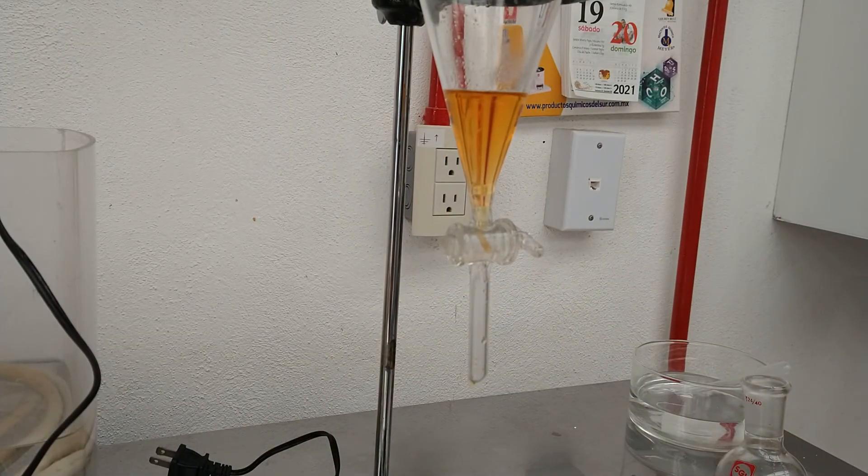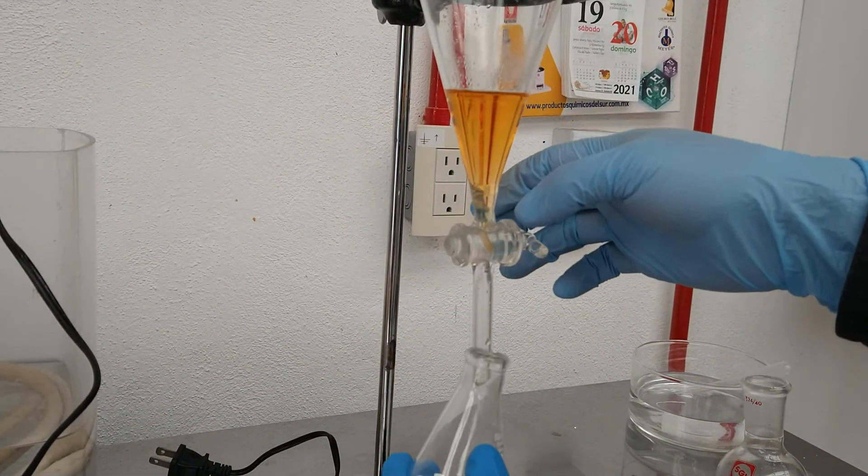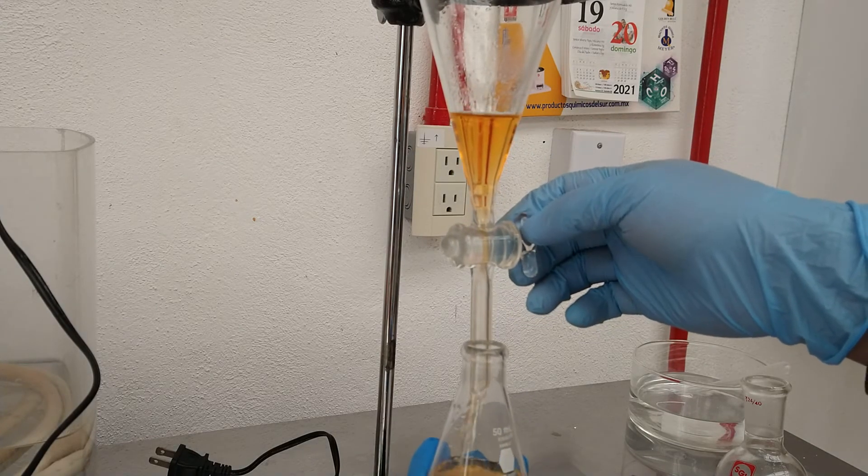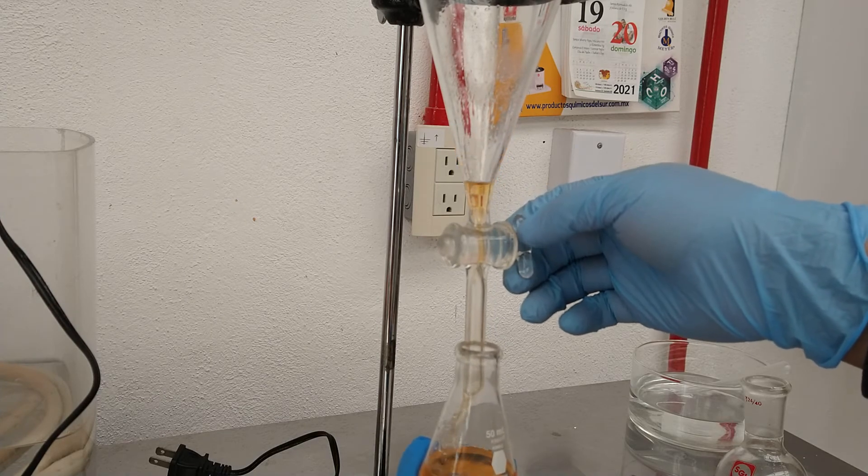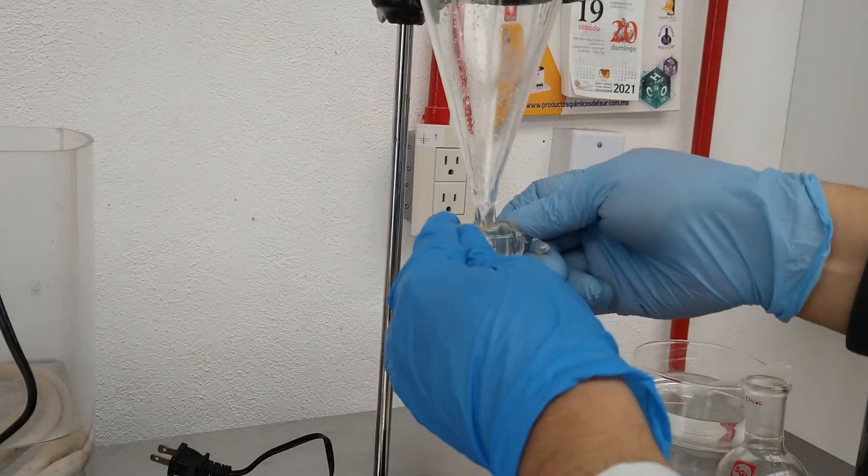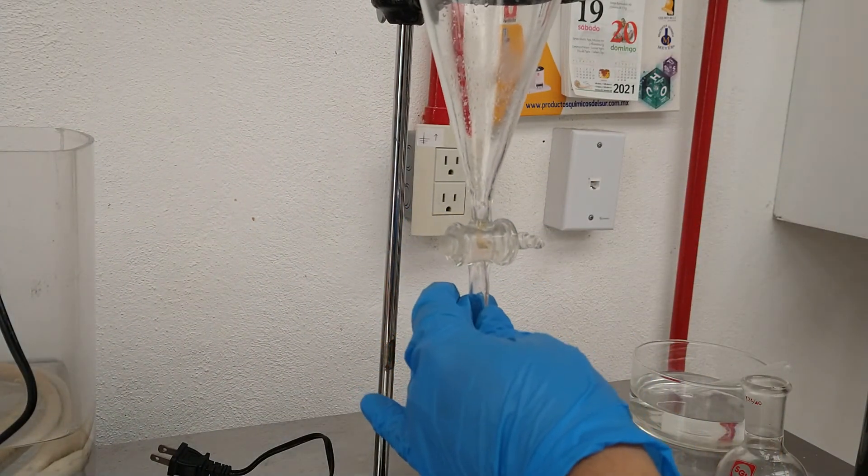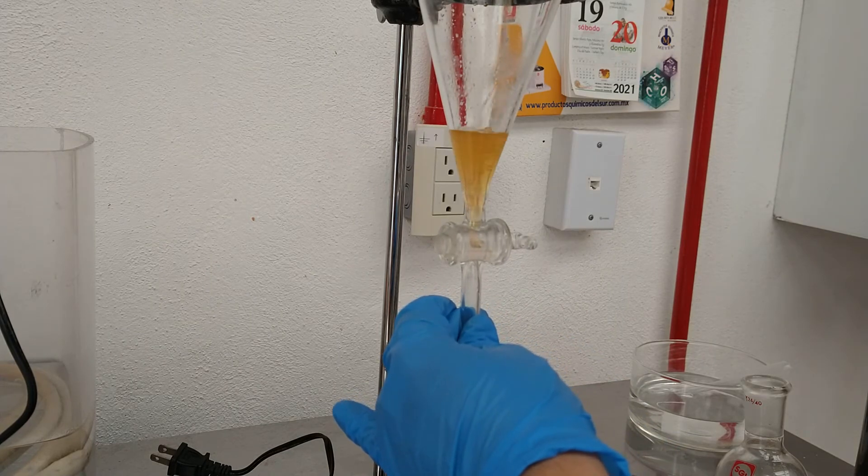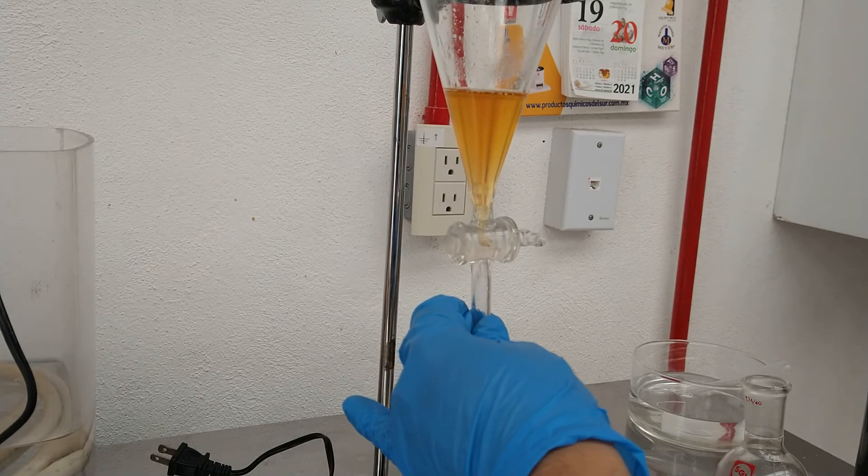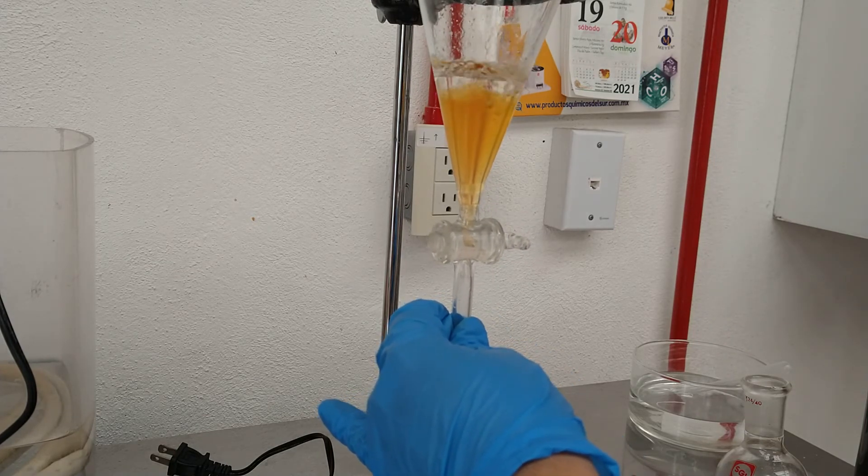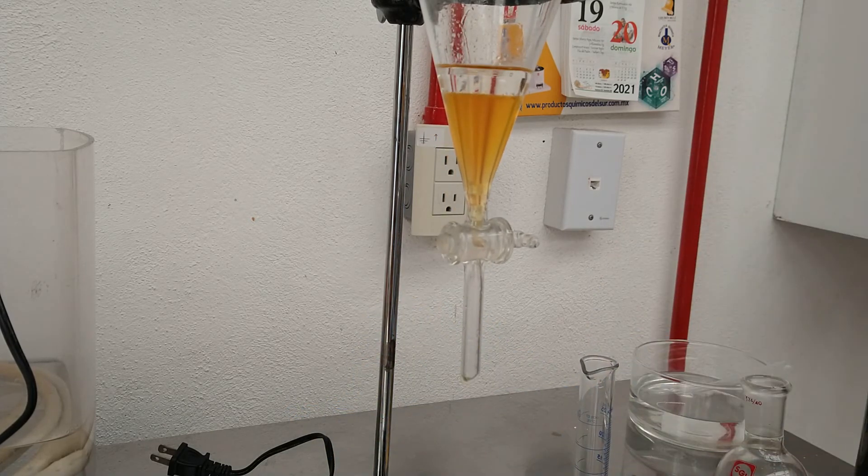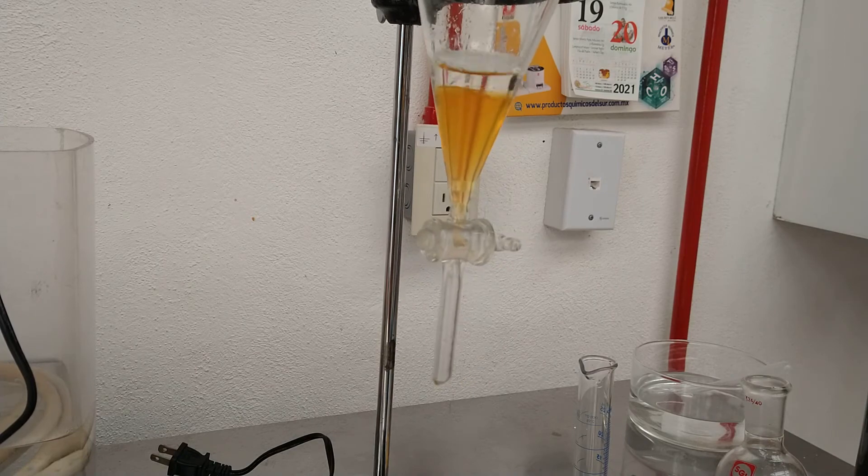We save and drain both layers. The organic layer we decant over some calcium chloride. Then we transfer again the aqueous layer to the separation funnel and add approximately 15 ml of ether to extract the remaining ethyl acetoacetate that stays in solution in the water.